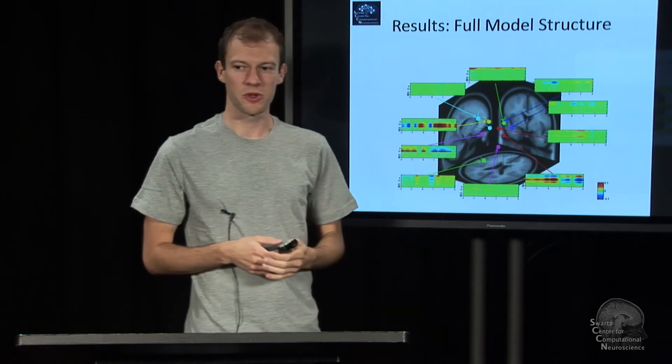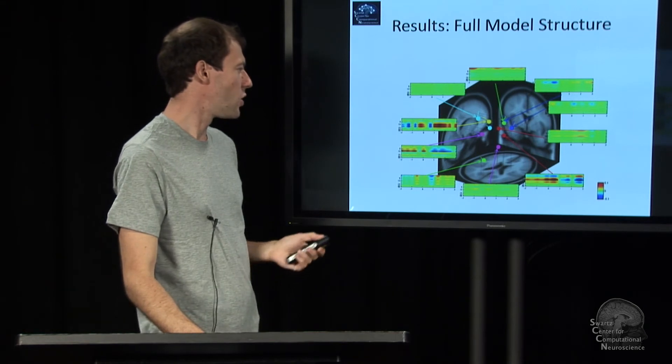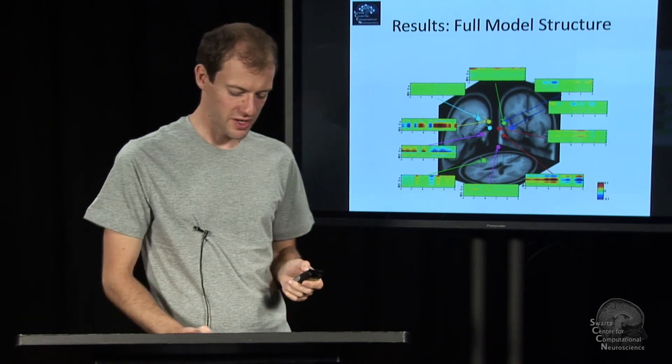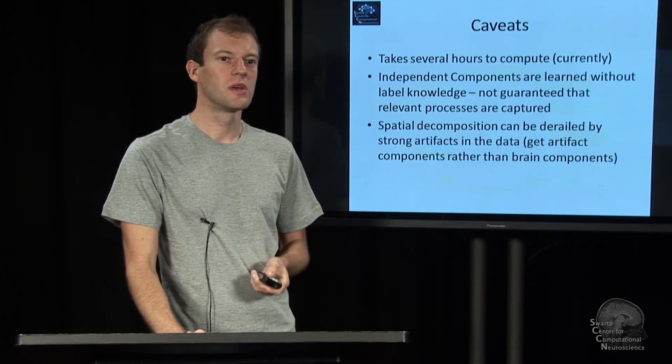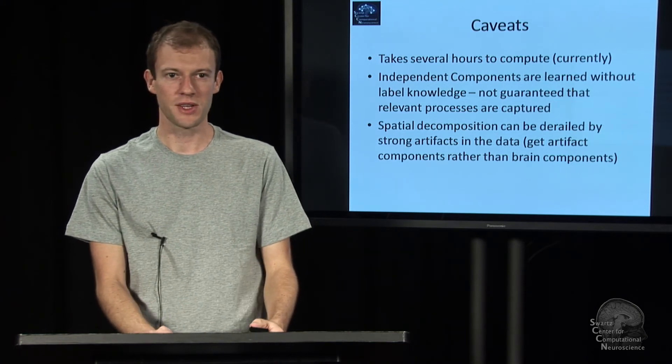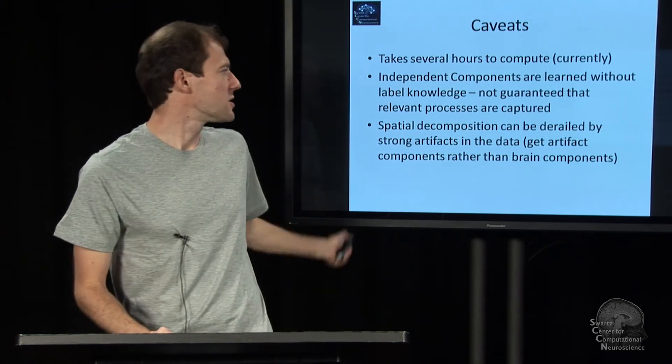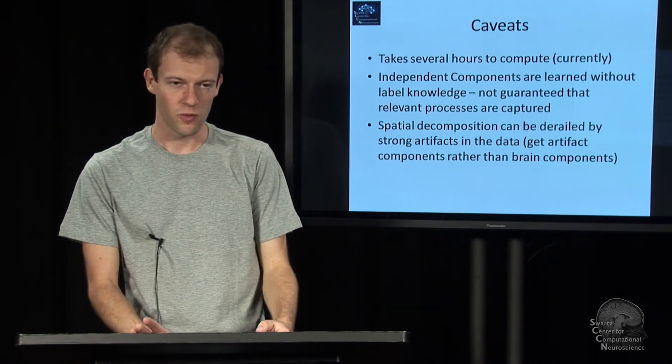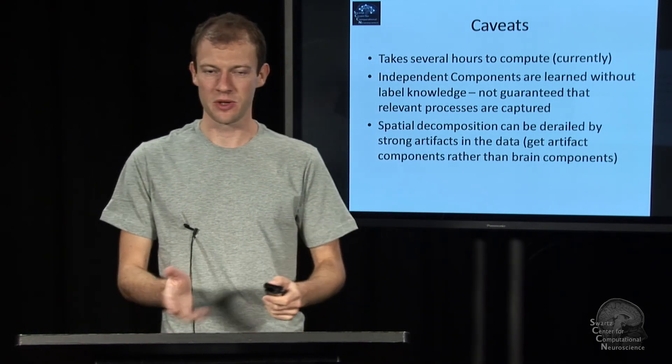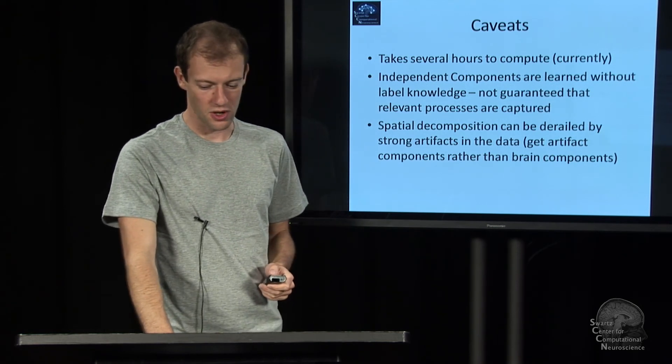So we've published this at ICON. We're actually currently finishing up a paper, journal paper on that one. So there's a bunch of issues, of course, if you're running approaches like that, such as it may take a couple of hours to calculate. Also, again, you're not necessarily guaranteed to get what you want in the ICA, but you can work around that. And if you have artifacts, you can get problems if you're not having ways to deal with that. So in particular, ICA is somewhat sensitive, but there's also lots of artifact rejection techniques that are applicable there. And that's the end of the outlook. There is a few more remarks that I make subsequently.